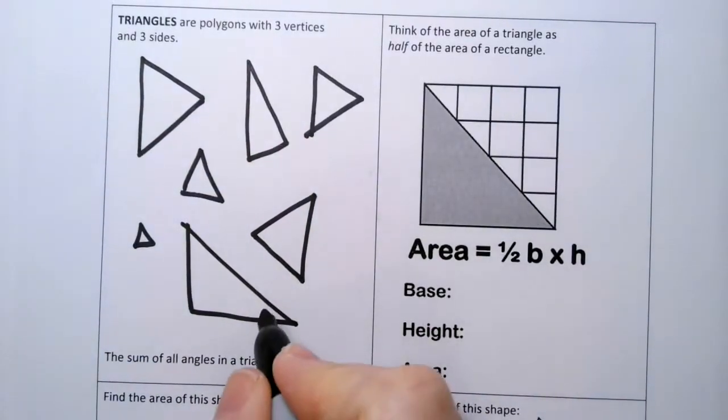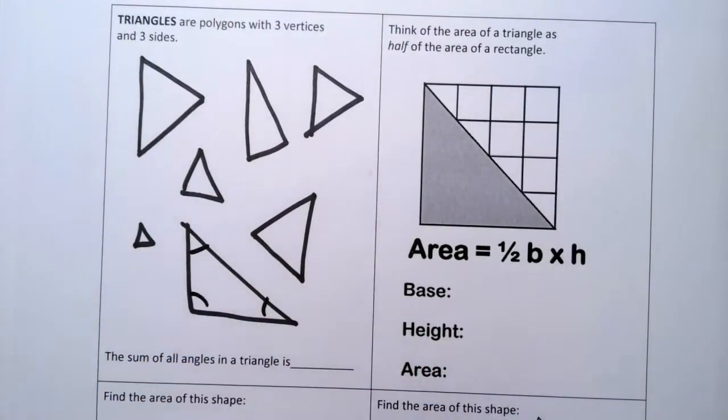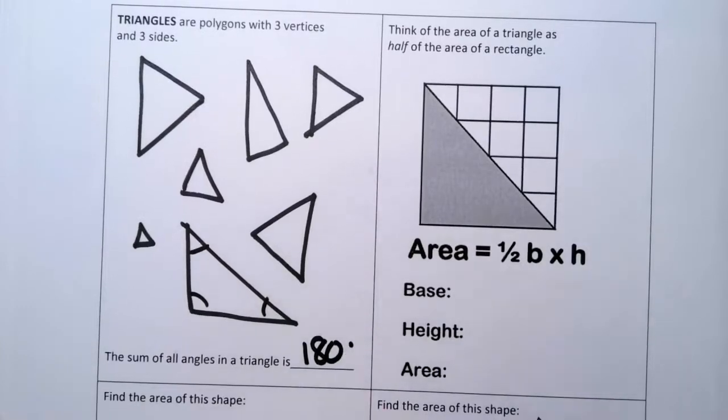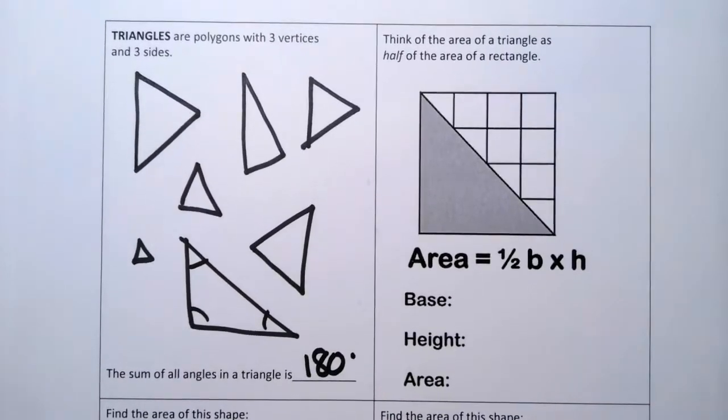Okay, when you sum all the angles in a triangle, you get 180. So that's half of what it was in a quadrilateral. That's interesting.